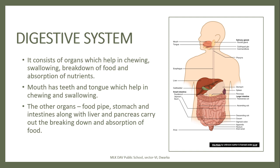Some organs are inside the body and cannot be seen. The mouth, which has teeth and tongue, helps in chewing and swallowing the food. Whereas the organs like food pipe, stomach, and intestine, along with liver and pancreas, carry out the breaking down and absorption of food.